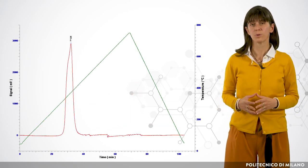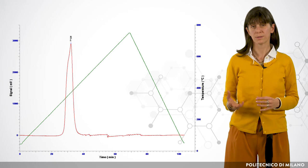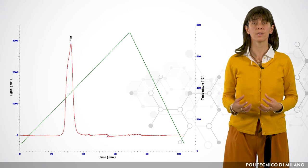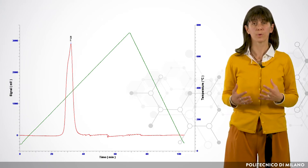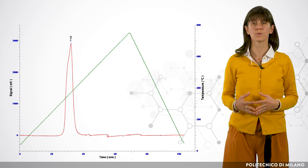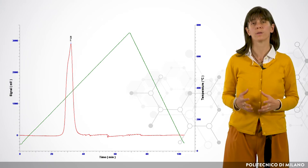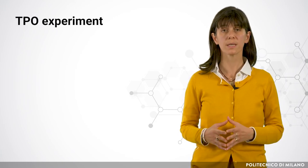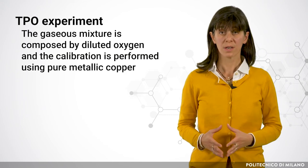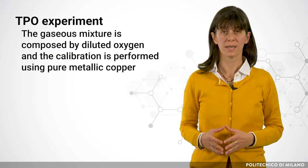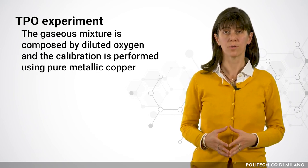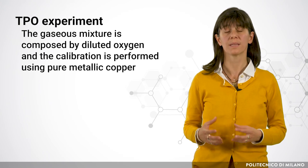The correlation between the area of each reduction peak and the amount of consumed hydrogen is given by appropriate calibration performed using a pure copper oxide sample. In the case of a TPO experiment, the principle is the same: the gaseous mixture is composed of diluted oxygen and the calibration is performed using pure metallic copper.